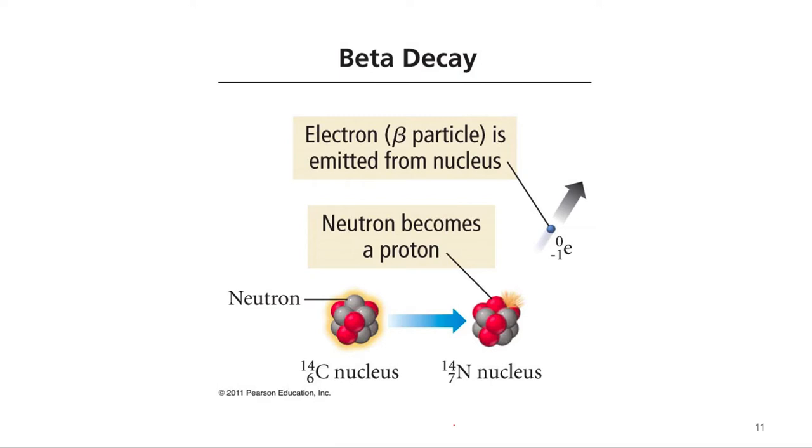And so let's write the balanced nuclear equation for this process. So carbon-14 is kicking off an electron when it undergoes beta decay. And so what we've got is carbon-14 goes to nitrogen-14 plus electron, a beta particle. So does 14 equal 14 plus 0? Yeah. Does 6 equal 7 plus a negative 1? Yes, it does.